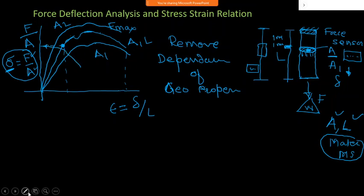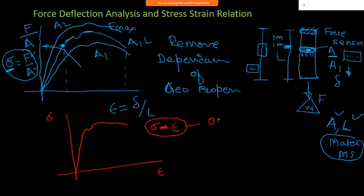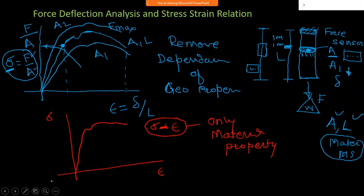Instead of having many different curves for different geometries, we get a single curve for a particular material. Plotting strain on one axis and stress on the other gives us the stress-strain curve. This stress-strain curve represents only the material property - that is the key advantage, which is why we prefer stress-strain over force-deflection.